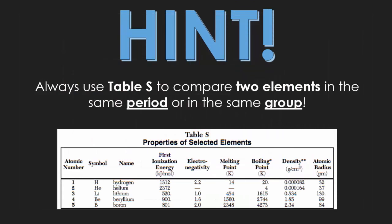If you ever are asked to compare two elements in the same period or same group on their electronegativities or their ionization energies, always refer to table S. Sometimes they refer to just the energy to lose electrons or the attractiveness of an atom. Anytime there's a question about those, table S will give you the answer. You don't need to guess, you just have to look it up on table S.